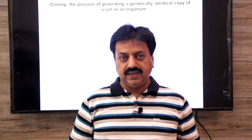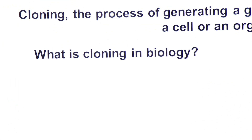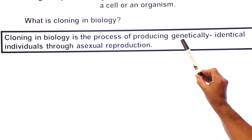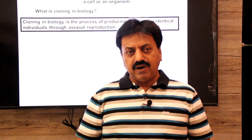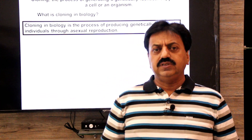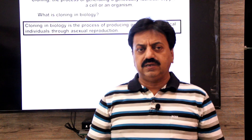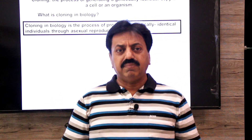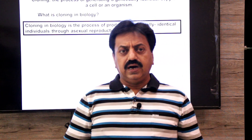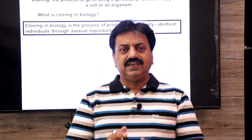Today in this lecture we will study natural cloning as well as examples of artificial cloning. First we will define what is cloning in biology. Cloning in biology is the process of producing genetically identical individuals through asexual reproduction. Any organism — whether it is bacteria, a plant, or an animal — when it generates duplicate copies through asexual reproduction, that is called cloning. For example: binary fission in bacteria, binary fission in planaria, vegetative propagation in plants, and budding in hydra. All asexual reproduction types in biology are considered natural cloning.